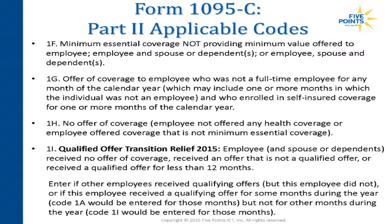1A and 1E are the go-to codes. 1E means you're offering it and it's affordable, but you're not using the federal poverty level safe harbor — you may be using the W-2 or rate of pay safe harbors instead to determine affordability. 1F is minimum essential coverage not providing minimum value. If you're a MedVan employee you all have minimum value plans — that's been checked.